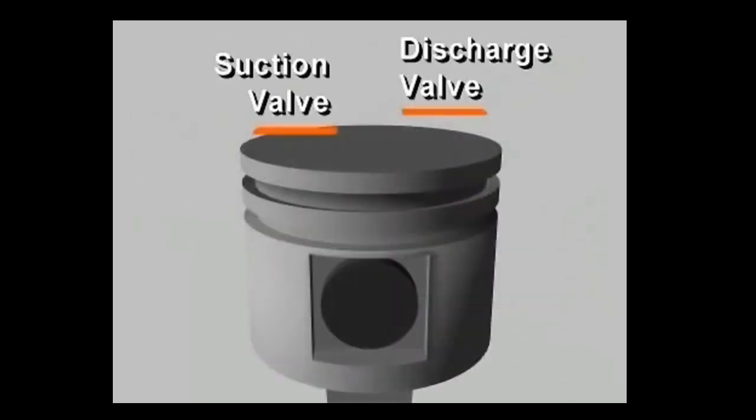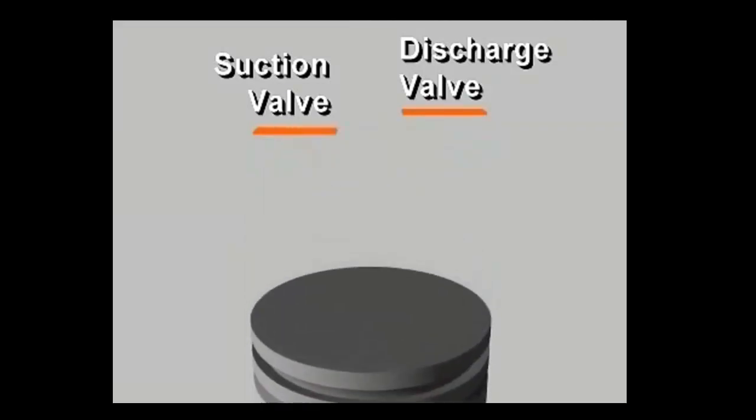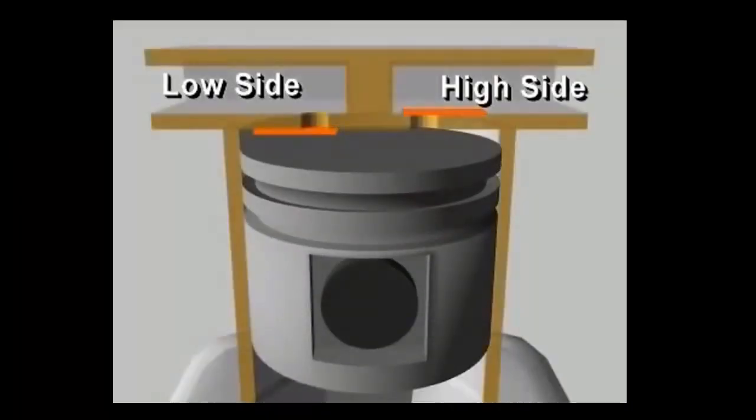In each cylinder, reciprocating compressors have both a suction valve and a discharge valve. These valves give the compressor its ability to pump refrigerant vapor against a pressure difference. They are usually located in the head of the cylinder, in passages connected to the high or low pressure side of the system.